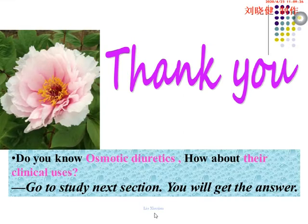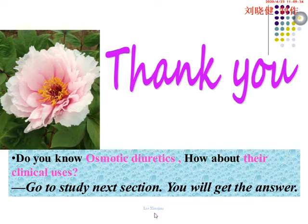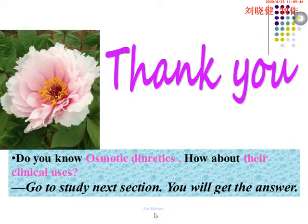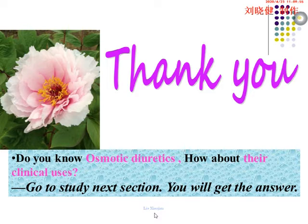You have now finished the study of diuretics, including loop diuretics (furosemide), thiazide diuretics, potassium-sparing diuretics, and carbonic anhydrase inhibitors. They have different characteristics of their diuretic effects, different typical clinical uses, and different adverse effects. Try to remember these well.